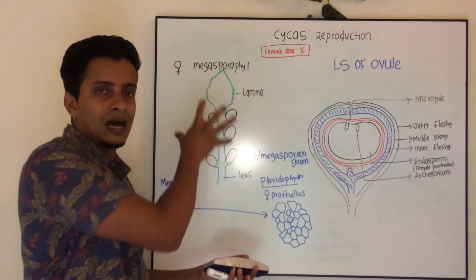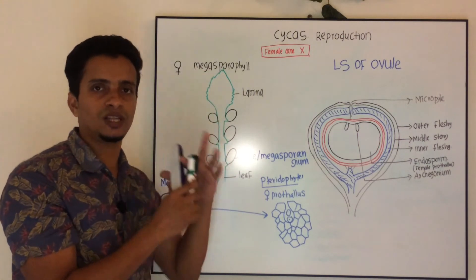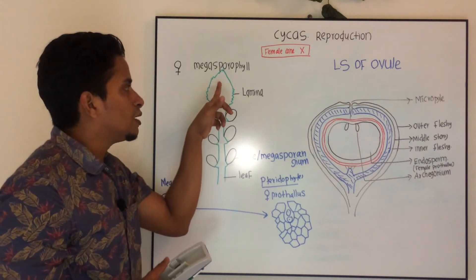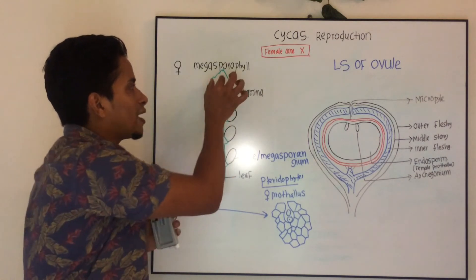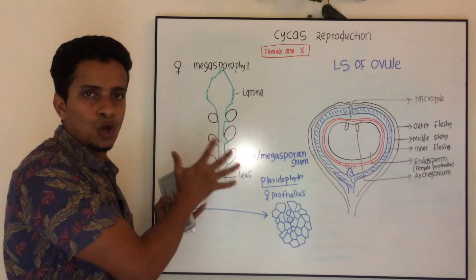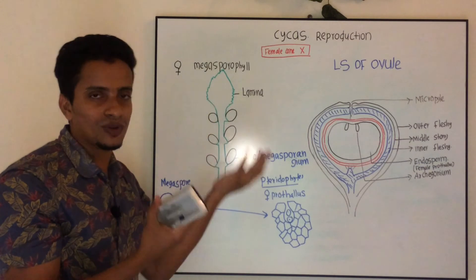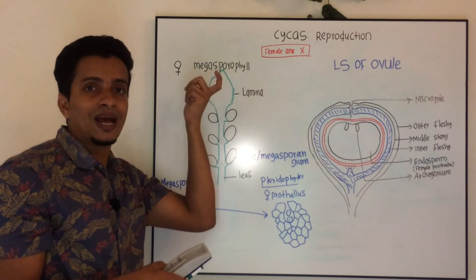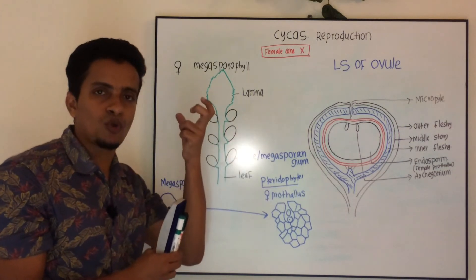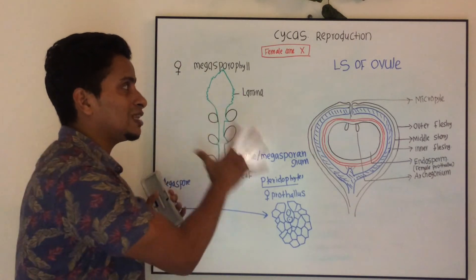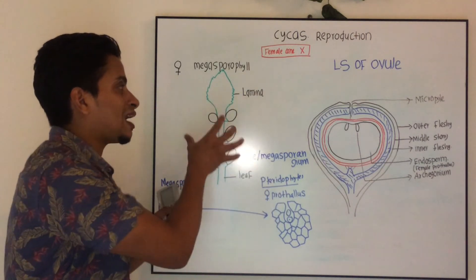This is an example of a megasporophyll. The green structure represents the leaf and the black structure represents the megasporangia. A megasporophyll has a stalk and an expanded lamina-like blade region. In the case of Cycas megasporophyll, megasporangia number one or two, and these megasporangia are referred to as ovules — so the ovule is another name for megasporangium.